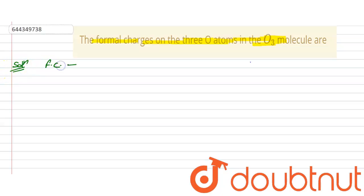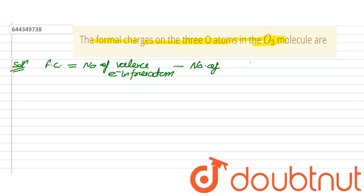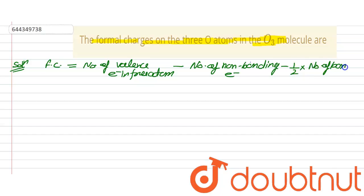The formula for formal charge equals the number of valence electrons in the free atom, minus the number of non-bonding electrons, minus half of the number of bonding electrons.